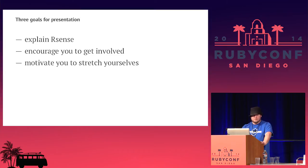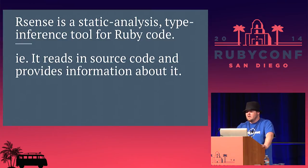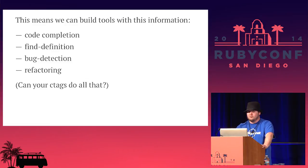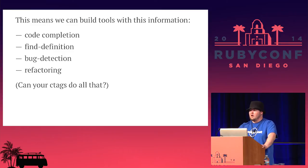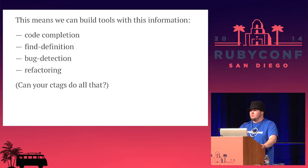I've got a few goals for this talk today. I want to explain what R-Sense is, encourage you to get involved, and motivate you to stretch yourselves as programmers. R-Sense is a type inference tool for Ruby. It reads in the source code and provides information about it, so we can build tools to do really cool things like code auto-completion, find by definition, error detection — especially type-based error detection — and automatic refactoring. These are tools typically available in statically typed languages, and R-Sense makes it possible to bring that kind of tooling to Ruby.